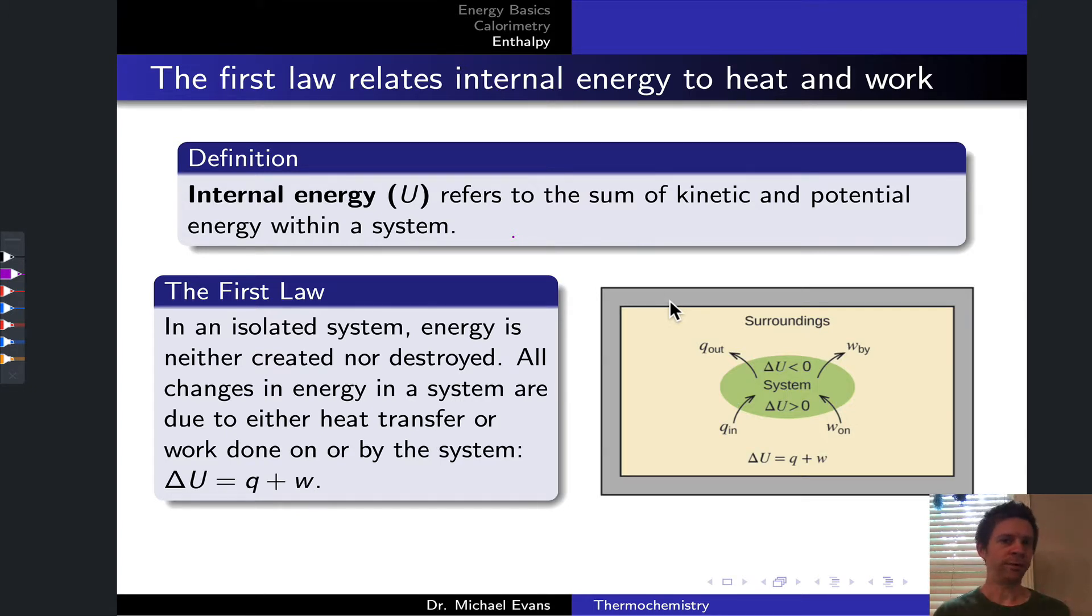We've discussed so far some distinctions between different types of energy, and there's one last important distinction we need to make: that between external energy and internal energy. Internal energy, which we're going to represent with the symbol U, is far and away the most important type of energy in chemical thermodynamics. Because what we're interested in is the energy inside our system due to the kinetic and potential energy of the molecules within the system. That's internal energy.